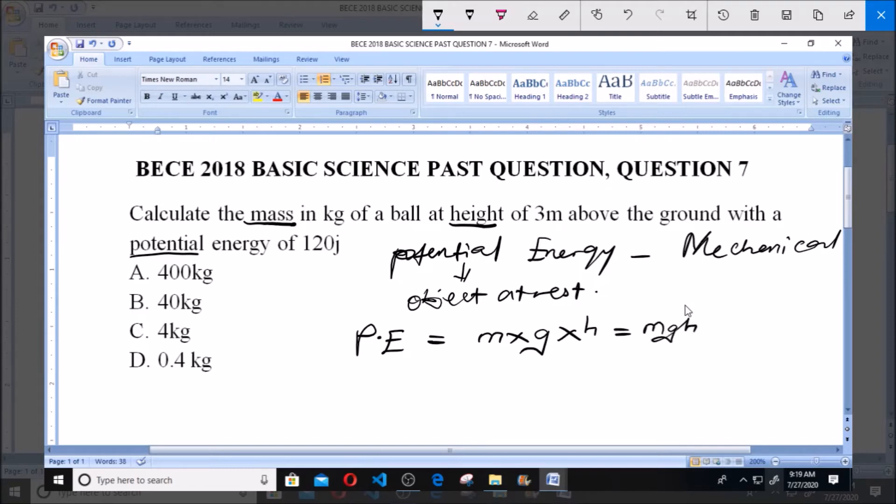But now, we have our potential energy, PE, equals 120 joules. We have our height, H, to be 3 meters. And our G, which is the constant acceleration due to gravity, is equal to 10 meters per second squared.